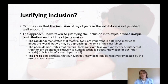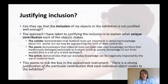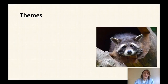The article demonstrates that our everyday knowledge can be negatively impacted by the use of material tools. I feel the first and third are pretty straightforward, and the second — the poem — is a little bit more of a stretch. I feel it will still work because the link and inclusion are justified. It seems to tick the box in the assessment instrument that says there is a strong justification of the particular contribution each individual object makes to the exhibition.